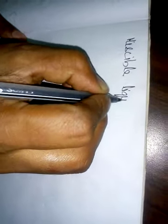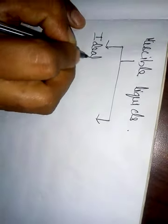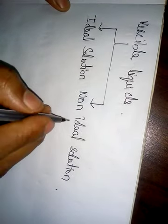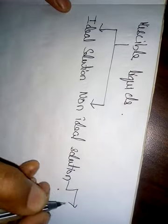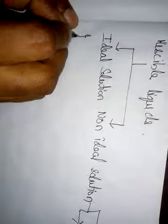These miscible liquids form mainly two types of solutions: first, ideal solutions, and then non-ideal solutions. Non-ideal solutions are further divided into two types, which we will discuss after covering ideal solutions.